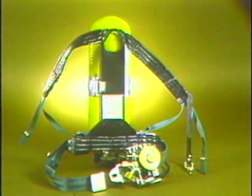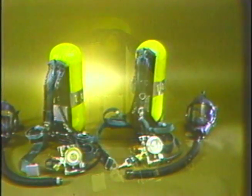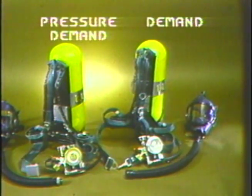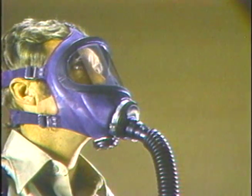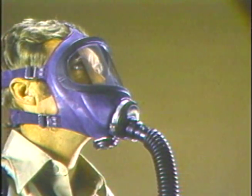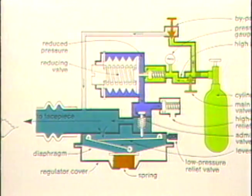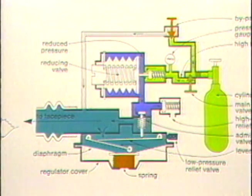At this point you should be aware that there are two types of open-circuit self-contained breathing apparatus: the pressure demand type, which we've been discussing, and the demand type. A pressure demand mask maintains a slight positive pressure in the face piece during both inhalation and exhalation. This prevents small inward leaks into the face piece, as can happen with demand type masks. The regulator of a pressure demand apparatus has a spring-loaded diaphragm to permit airflow from the cylinder to the face piece whenever you're not exhaling.